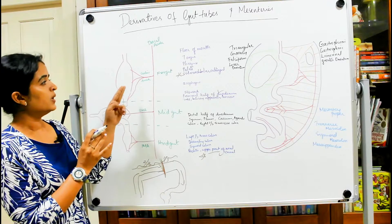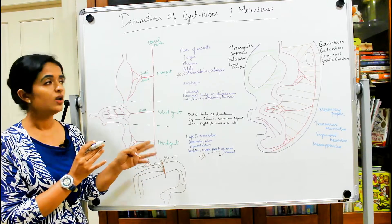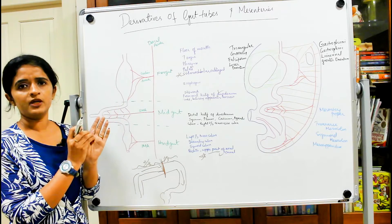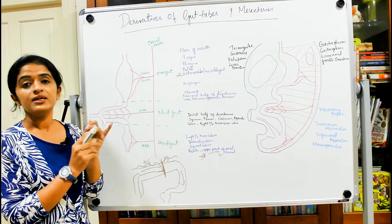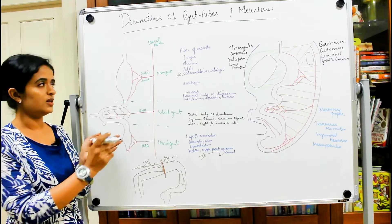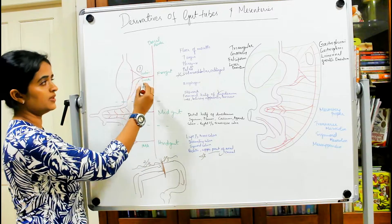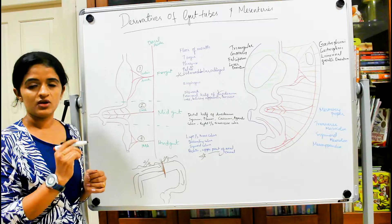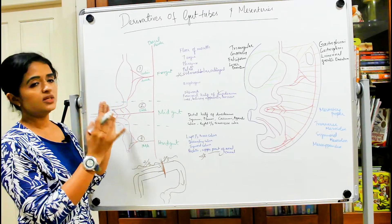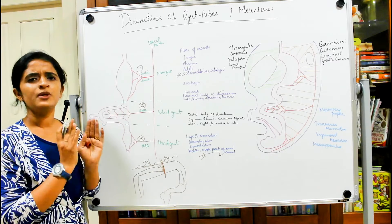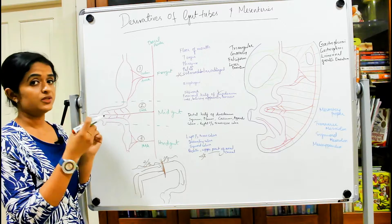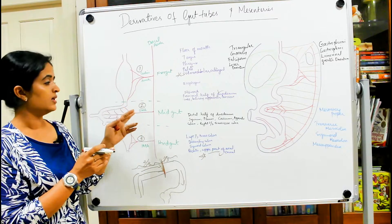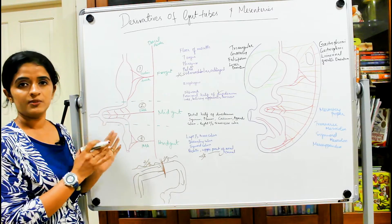You have the dorsal aorta on the posterior abdominal wall giving branches to the entire gut tube. The main branches arising from the aorta are the celiac trunk, superior mesenteric artery, and inferior mesenteric artery. These enter the gut tube through the mesentery, which suspends the entire gut tube. The celiac trunk supplies the foregut, the superior mesenteric artery supplies the midgut, and the inferior mesenteric artery supplies the hindgut.